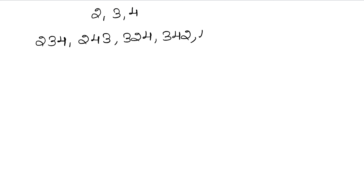So, 4 goes to the first place and 2 is next — so 4, 3, 2. Then 3, 2. And this way, 3 goes to 2. So we get 4, 2, 3. These are the possible numbers.